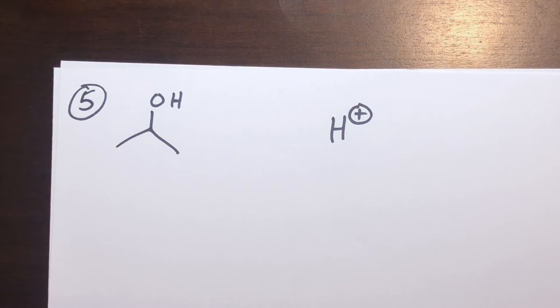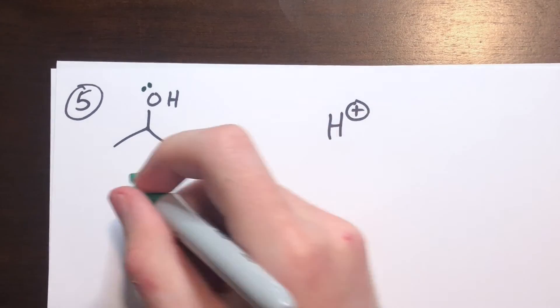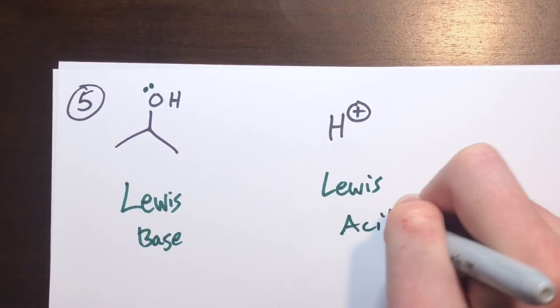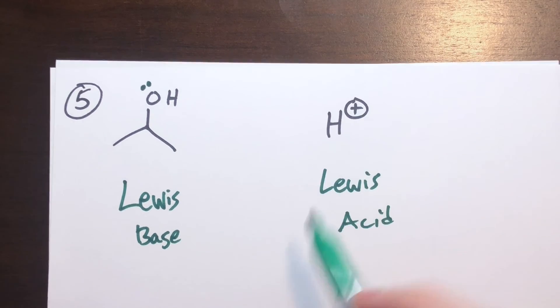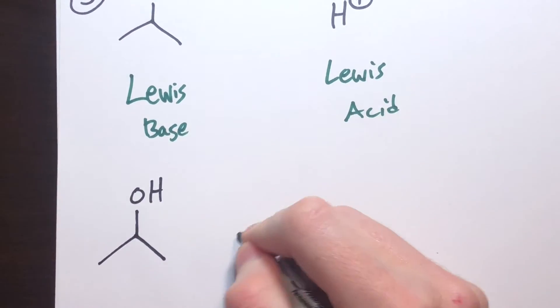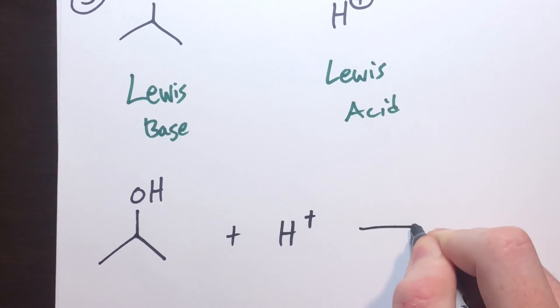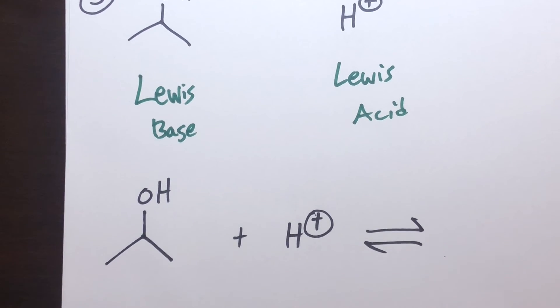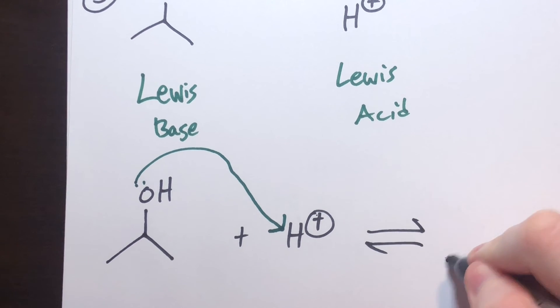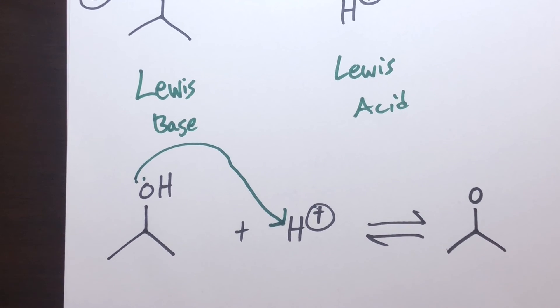In the last example, we have a lone pair on one molecule and the other is positively charged. The molecule with the lone pair is the Lewis base and the positively charged species is the Lewis acid. We create a bond between the Lewis base oxygen and the hydrogen. Drawing the completed reaction with arrows: the lone pair on the oxygen creates a bond to the hydrogen. Considering formal charge, the oxygen becomes positive because it now has a third bond — it's an OH gaining a hydrogen.